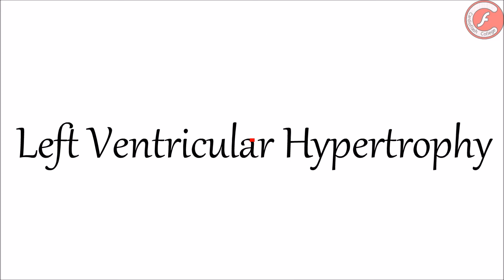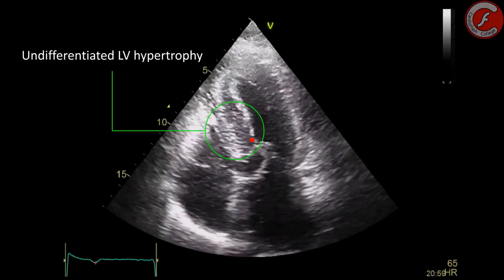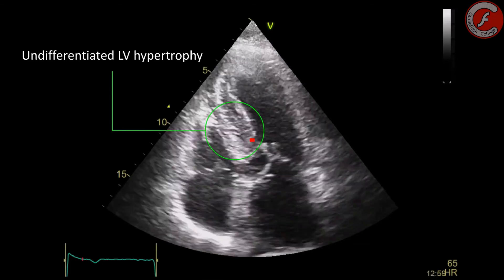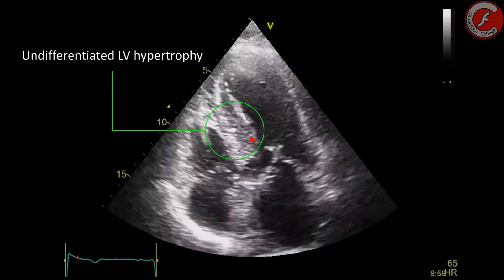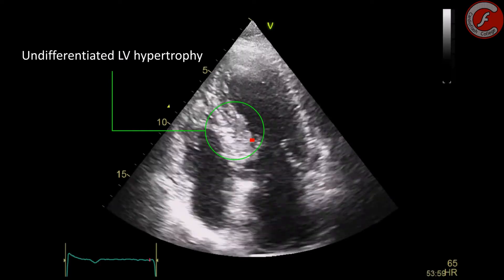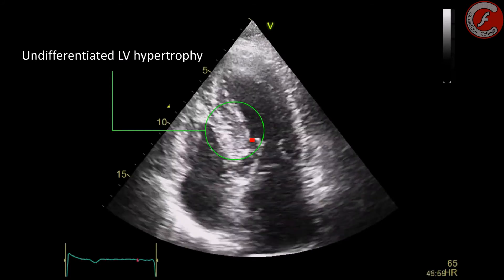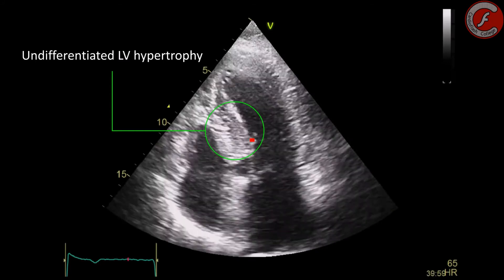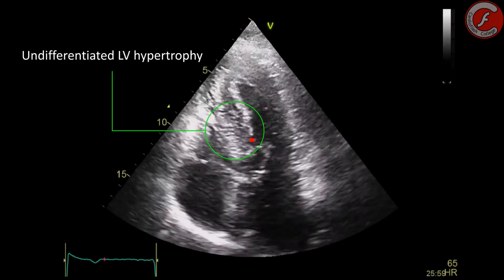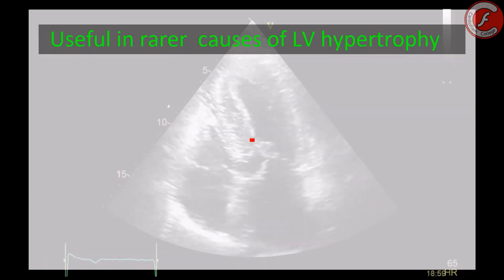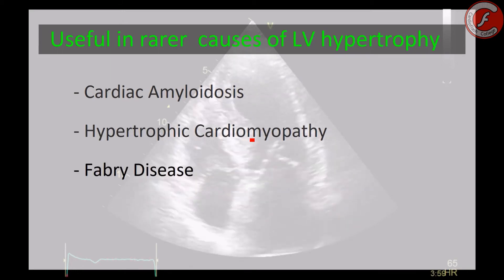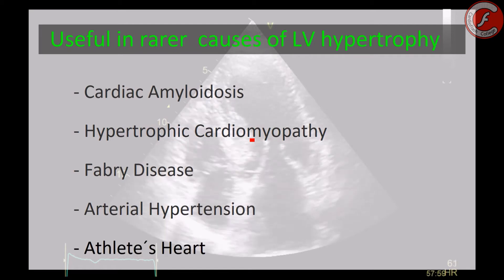Myocardial hypertrophy. As you know, the ejection fraction has serious limitations in the study of the systolic function of the left ventricle when the patient presents myocardial hypertrophy. Hence, this parameter is insufficient when identifying the type of cardiomyopathy and its prognosis, whereas the global longitudinal strain is not only capable of identifying the systolic dysfunction of the left ventricle in patients with myocardial hypertrophy and preserved ejection fraction, but it is also capable of identifying specific causes of myocardial hypertrophy, such as amyloidosis, hypertrophic cardiomyopathy, Fabry disease, hypertensive cardiopathy, or the athlete's heart.